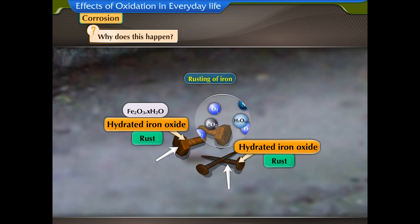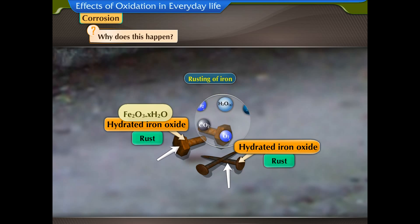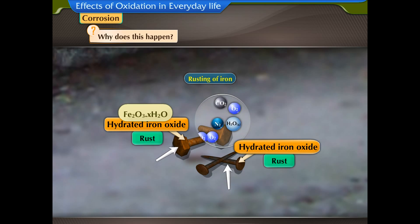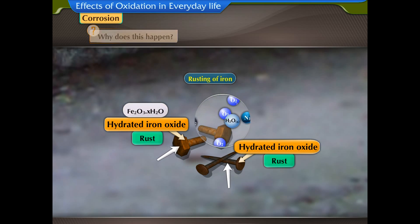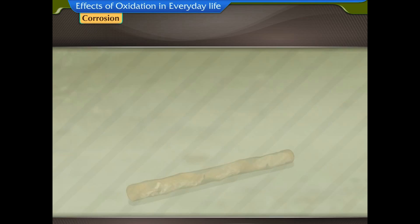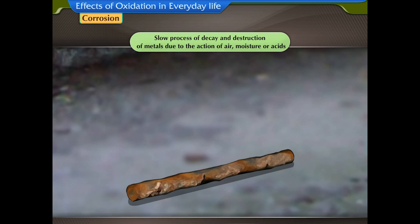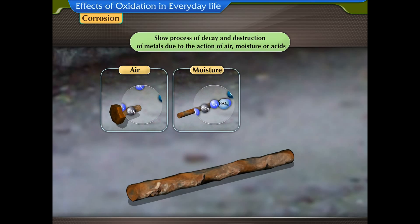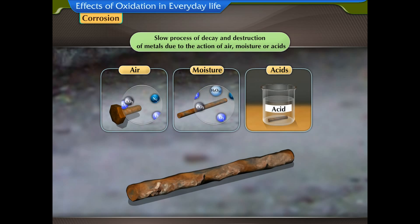The chemical formula of rust is Fe2O3·xH2O. This slow process of decay and destruction of metals due to the action of air, moisture, or acids is called corrosion.